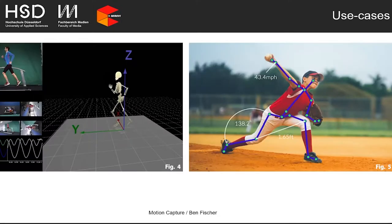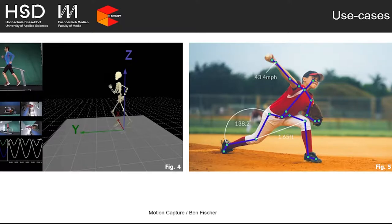Another use case is medicine, motion analysis, and research, where mocap is used for gait analysis, finding errors in movements to optimize them, preventing injuries, aiding recovery, or analyzing how an artificial limb should be designed. It's also used in professional sports to analyze near-perfect motion, learn from it, optimize it, and simulate what is possible with movements to further the athlete's performance.